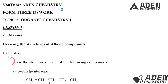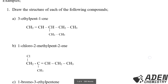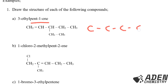Examples, number one, we are told to draw the structure of each of the following compounds. So part A, we're having 3-ethyl pent-1-ene. First of all, I have to know my parent name. My parent name is pent-1-ene. That means my parent name has 5 carbon atoms.